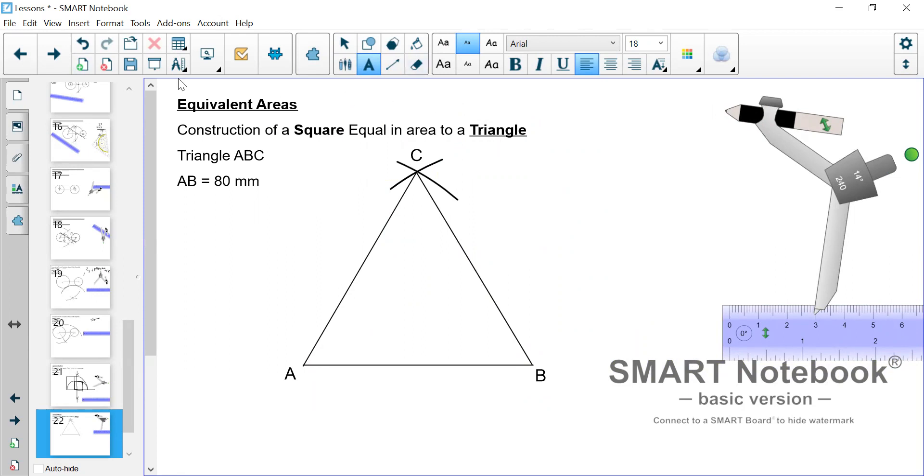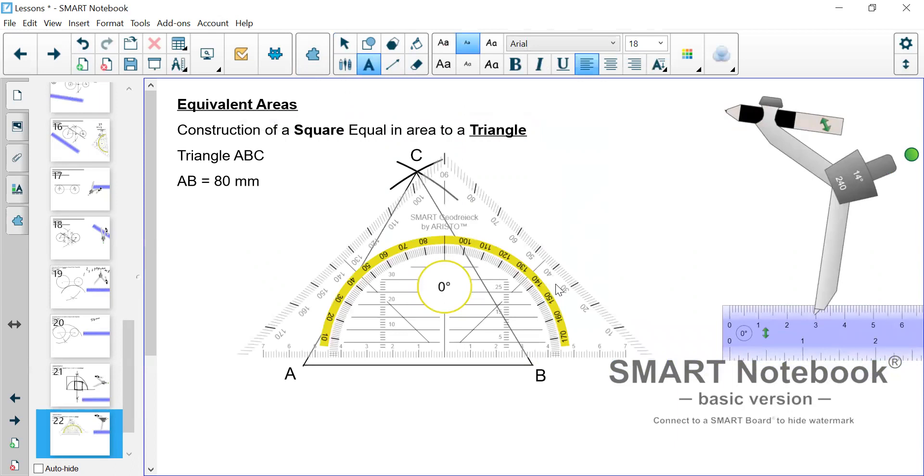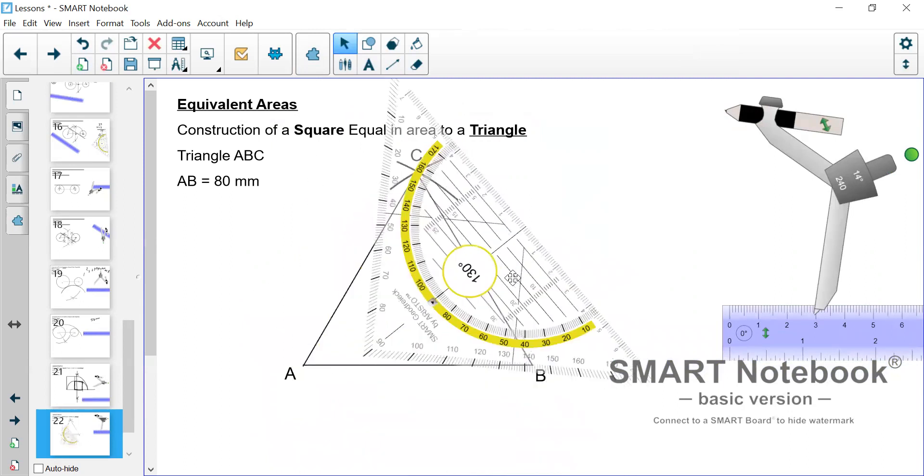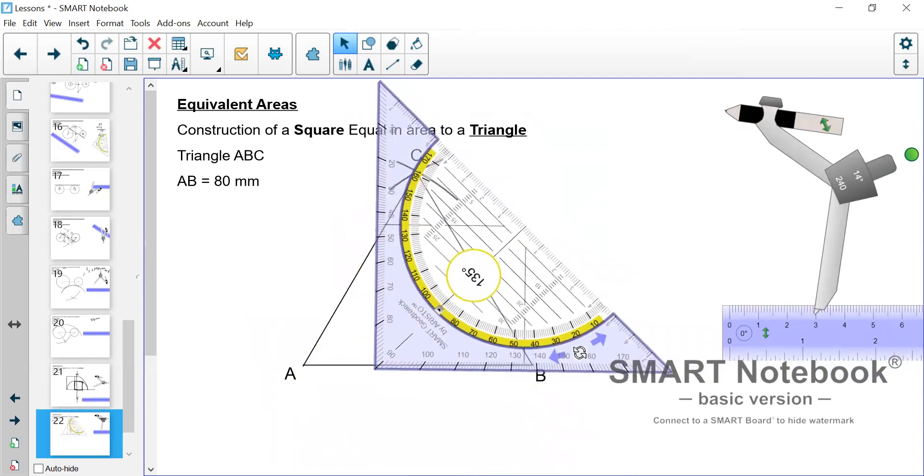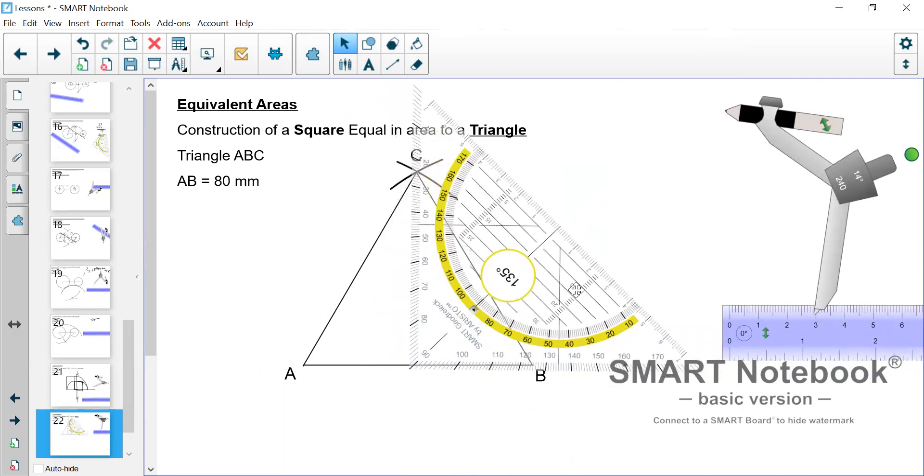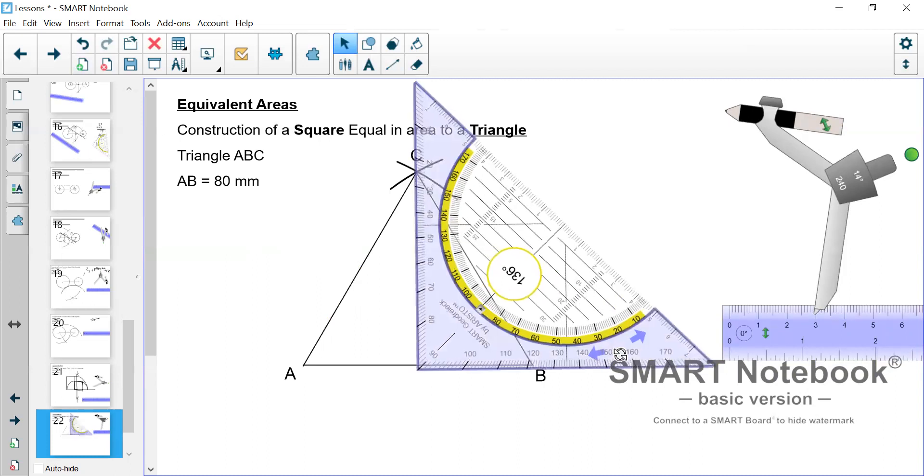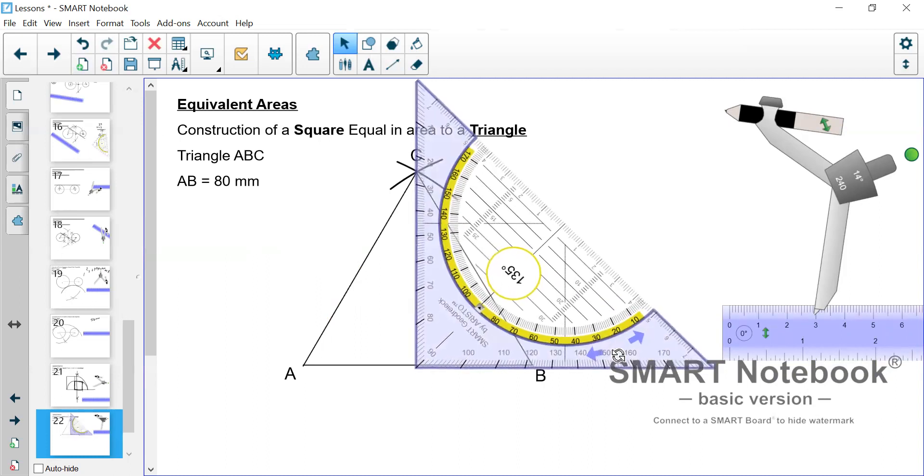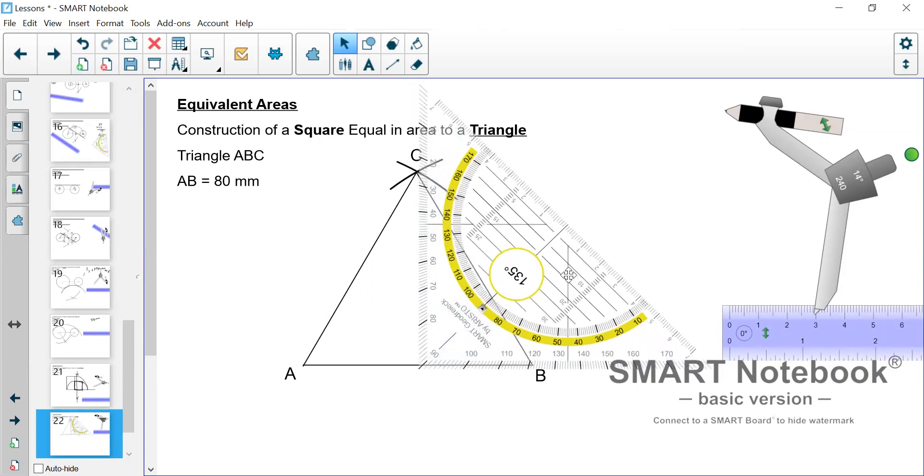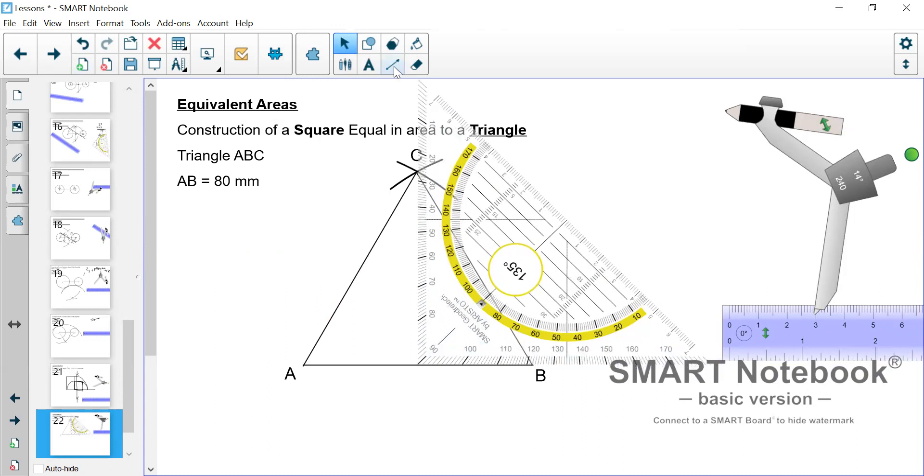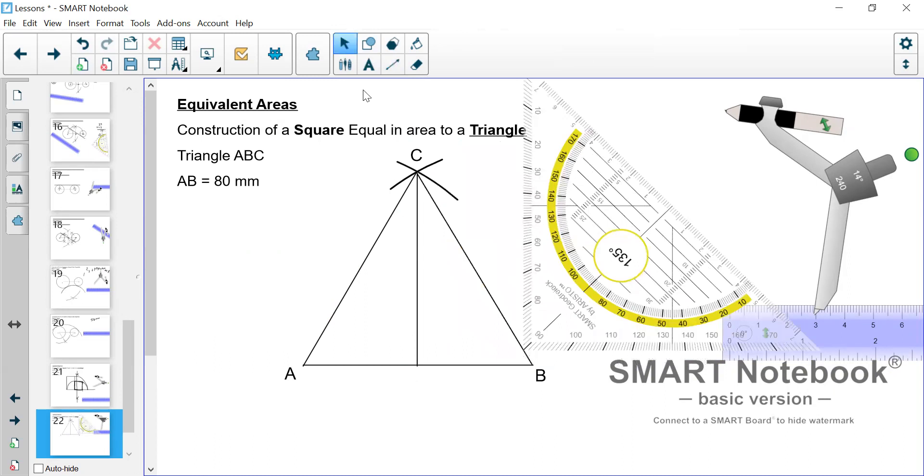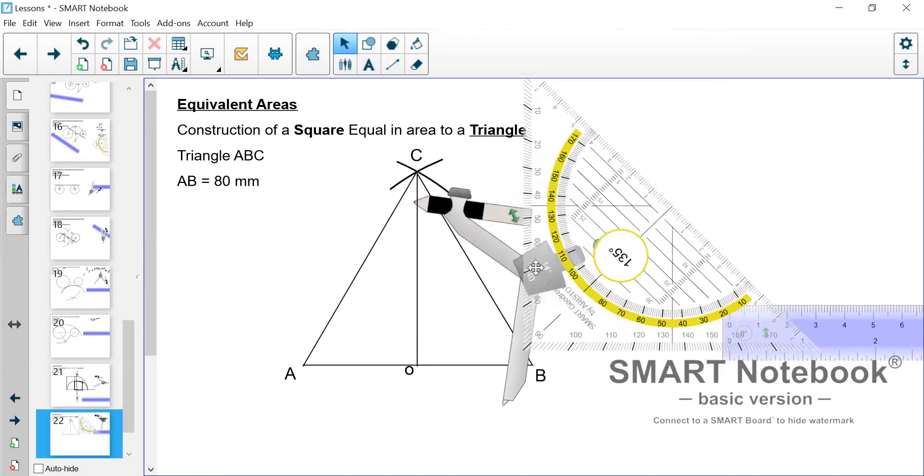So, we change this triangle now into a rectangle. And in doing that, we need to use the set square, and we mark off, or we insert our altitude. Because remember, we need to get the vertical height of the triangle, because the rectangle is half the vertical height of the triangle. So, we draw in this altitude. And then, of course, we bisect it. Let's just label this point as O. So, we bisect OC.